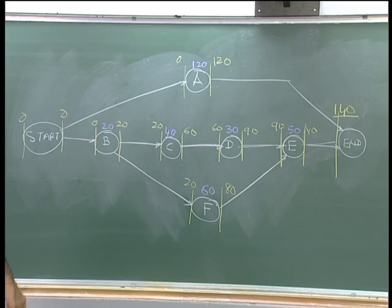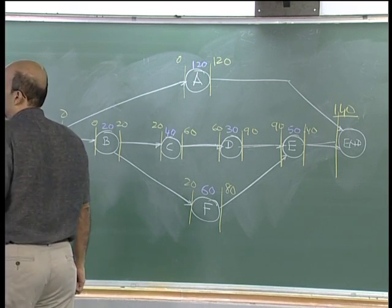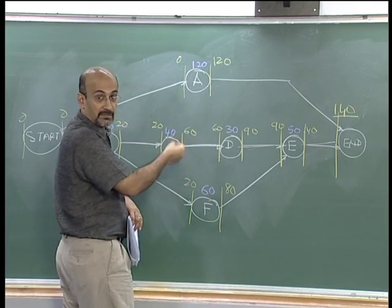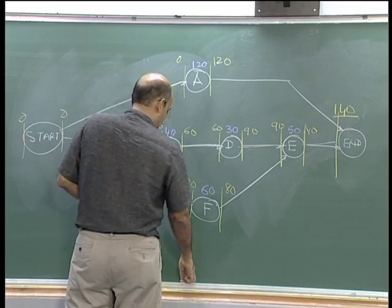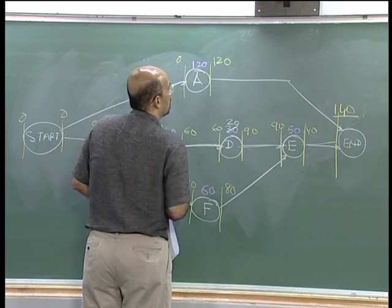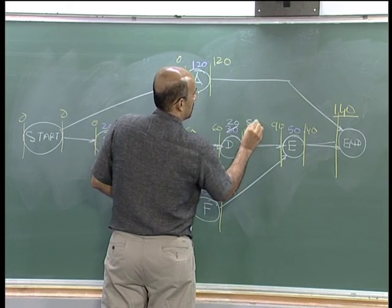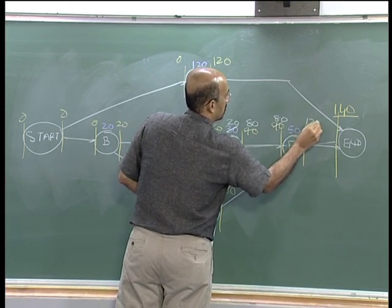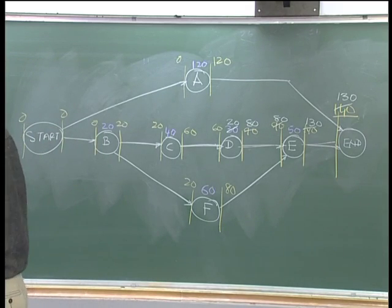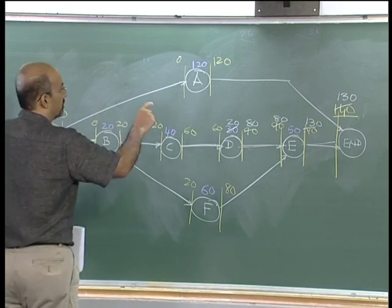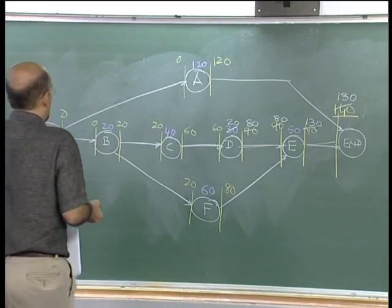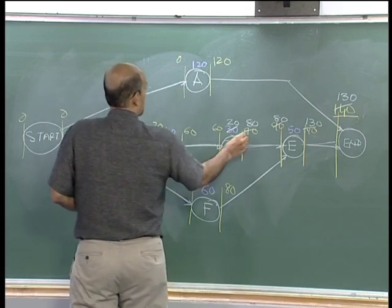So if I want to reduce duration, I have to crash one of these. My options are: D at 60 — it is so much less than the others — and by how much can I crash it? By 10 days. If I take it by 10 days, nothing else becomes critical meanwhile. So I take D and make it 20, and the project duration goes to 80. The crashing cost for D is 60 into 10 equals 600. D is now crashed out to the max, so I cannot take D anymore.